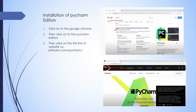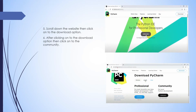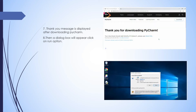Now scroll down the website. You can also download from here. Scroll down and then click on to the download option at the bottom. After clicking on the download option, click on to Community. Then click on the Community download. After that, a thank you message is displayed for downloading PyCharm.